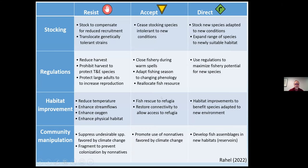We can create a table with our three options — resist, accept, and direct — across the top, and our four management tools — stocking, regulations, habitat improvement, and community manipulations — along the side. I won't have time to go through all of this; I have a manuscript in press and if someone's interested they can get in touch with me. But let's pick out some of these quadrants that deal with managing invasive species.